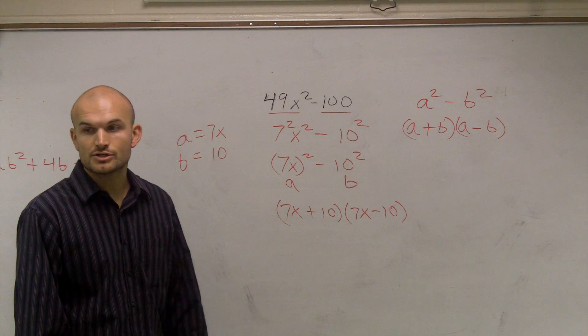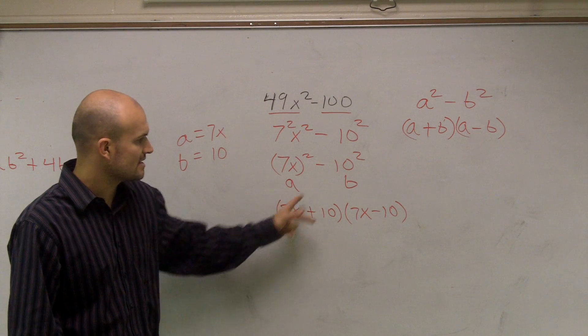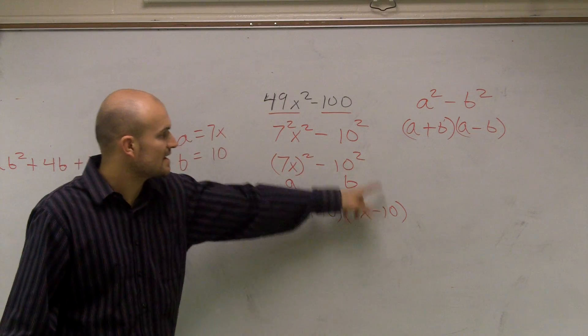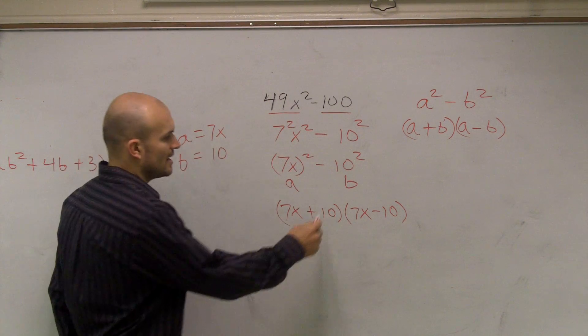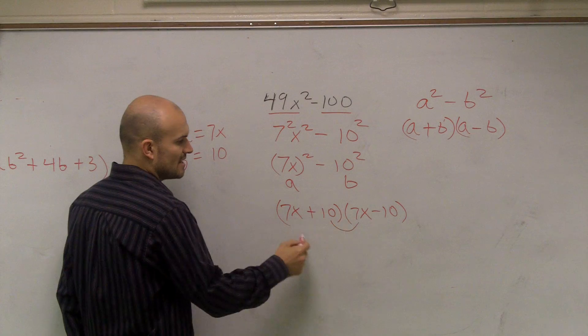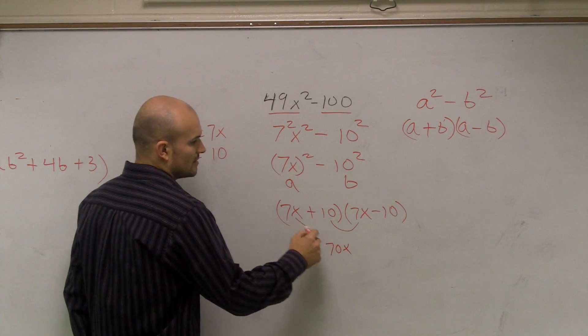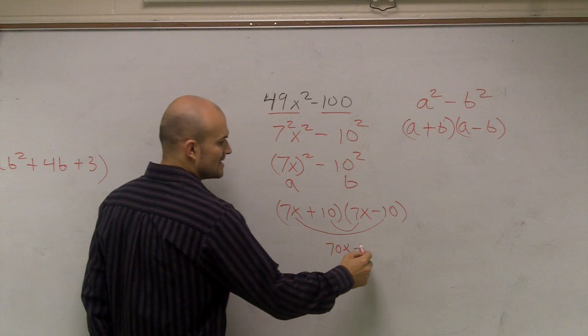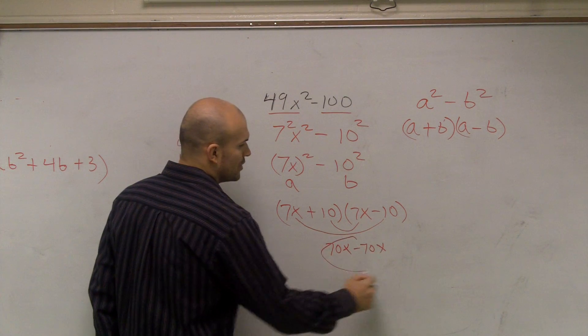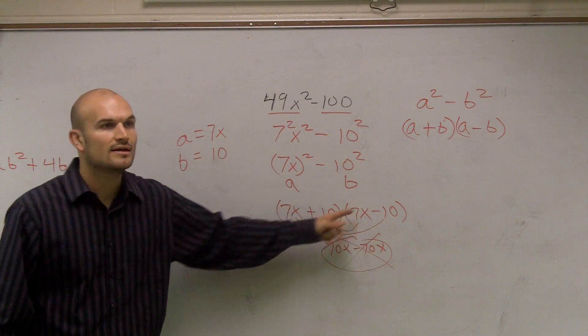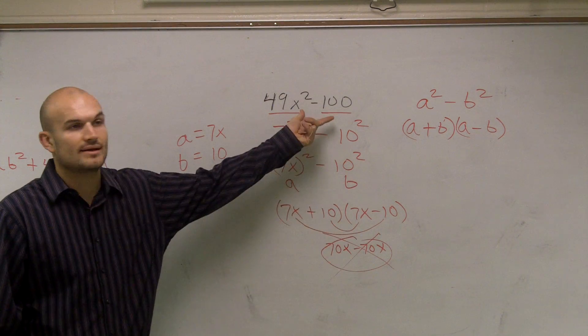And when you multiply this, 7X times 7X gives you 49X squared. 10 times negative 10 gives you negative 100. And look at the middle. 10 times 7X is positive 70X. 7X times negative 10 is negative 70X. So those cancel out. That's why this produces a binomial.